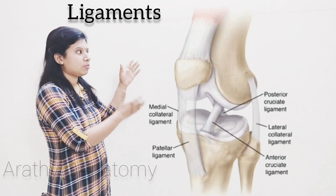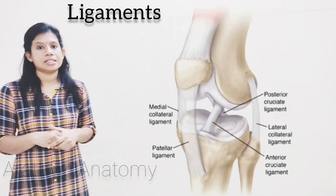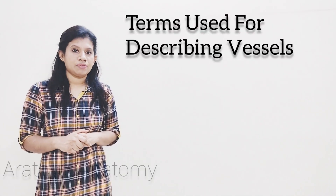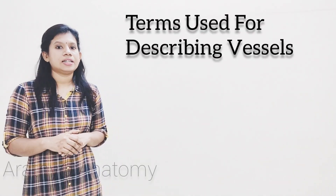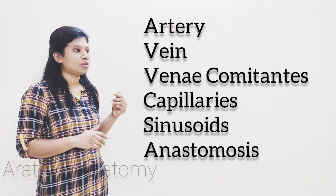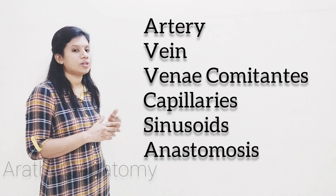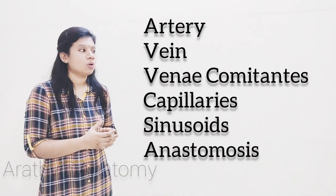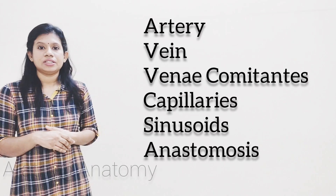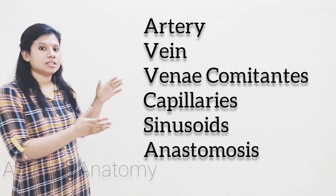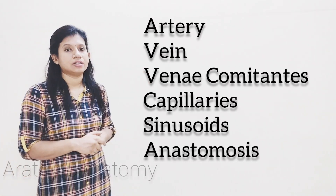That's all about the terms used for describing muscles. Now, moving on to the terms used for explaining vessels. Under that: what is artery, what is vein, what is venae comitantes, what is capillary, what is sinusoid, and what is anastomosis — these are the things which I am going to explain.